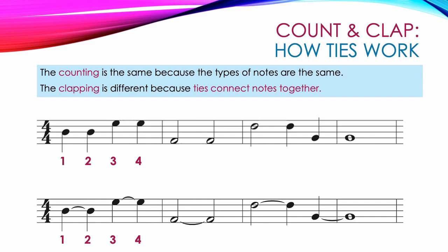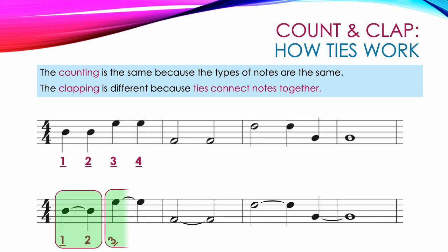The clapping is different because ties connect notes together. In the top example, there are no ties, so every note gets its own clap: one, two, three, four. But in the bottom example, we tie some notes together. Count one, the first quarter note, is tied to count two, the second quarter note, which makes a longer note. So we clap on count one, keep our hands together, and count out loud for count two: one, two. The next two notes work the same way — we clap on count three because it's the start of the note, keep our hands together because it's tied to the next note: three, four.